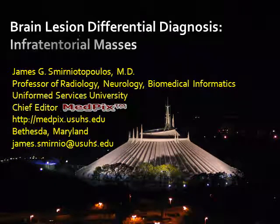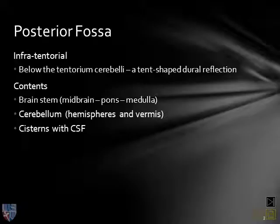Brain lesion differential diagnosis: infratentorial masses. The posterior fossa, or infratentorial compartment, is the space below the tentorium cerebelli. This is a tent-shaped dural reflection that attaches to the falx cerebri. At the junction of the tentorium and the falx, there is a long straight sinus, which is called the straight sinus.